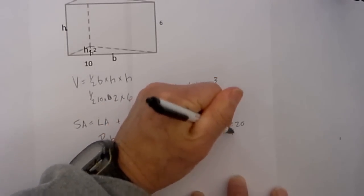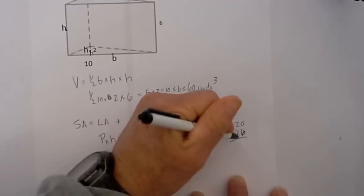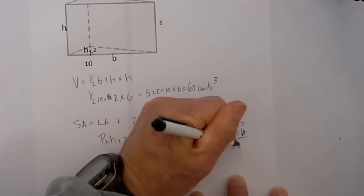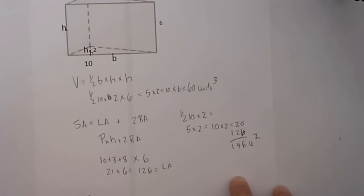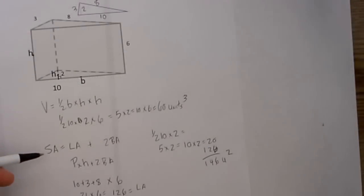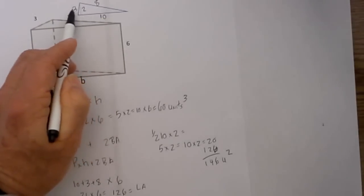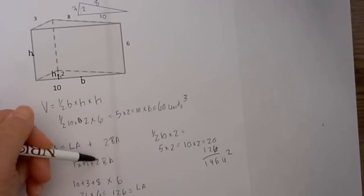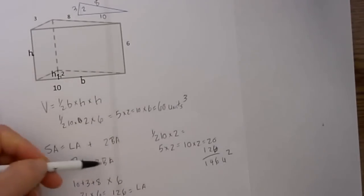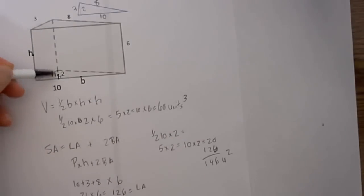We add those two values: 20 plus 126 equals 146, and it will be in units squared. To recap, to find the surface area we took the lateral area by taking the perimeter of 10 plus 3 plus 8 times the height of the prism, which was 6, and added that to 2 base areas found by taking one half the base of 10 times the height of the triangle.